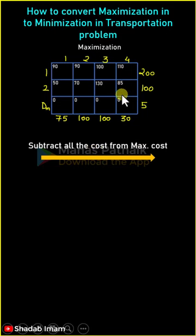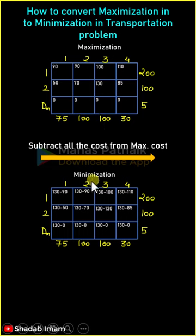In the above matrix, the maximum cost is 130. So the new minimization matrix will be 130 minus the respective cost value.